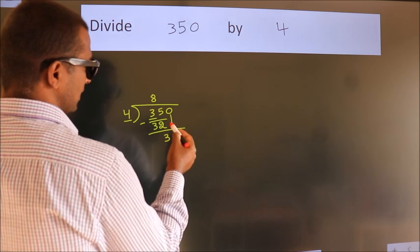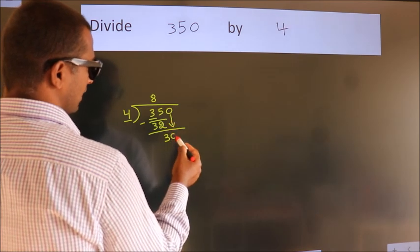After this, bring down the beside number. So 0 down. So 30.